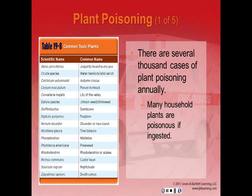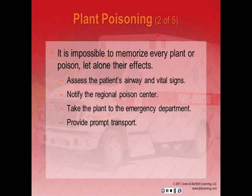Plant poisoning: there are several thousand cases annually. Many household plants are poisonous if ingested and some cause skin irritation. Some can affect the circulatory system, GI tract, or central nervous system. You cannot memorize every plant and poison. Assess the patient's airway and vital signs, notify the Regional Poison Control Center for help identifying the plant, take the plant to the emergency department, and provide prompt transport.